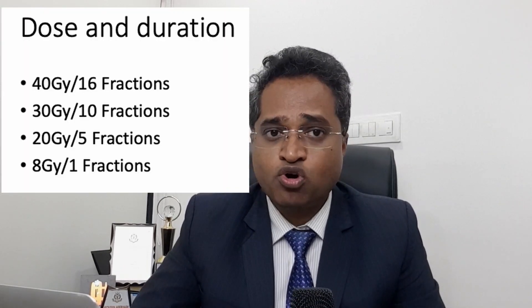Now I will tell you how palliative radiation therapy is given and what the dose is. There are different dose regimens used for palliative radiation. The most commonly used regimen is 30 Gray in 10 fractions, given over 2 weeks — Monday to Friday. Other regimens used in palliative care include 40 Gray in 16 fractions, 20 Gray in 5 fractions, and 8 Gray in a single fraction. The choice of regimen depends on the oncologist, the site of disease, the stage, and the volume of disease.